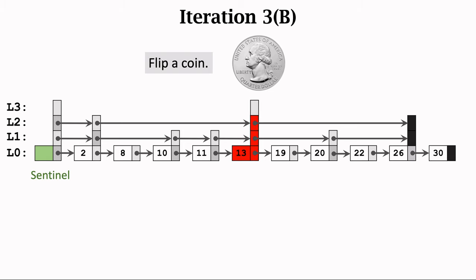The third example is to search for the key 20. Start from the Sentinel, move one step right and arrive at node 13. The key is greater than 13, so the key must be on the right side of node 13. However, node 13 is the end of layer L3, so we go down to L2. Start from node 13, move one step rightward in L2 — arrive at node 26. The key 20 is smaller than 26, so the key should be somewhere between node 13 and node 26. Go one layer down to L1. Start from node 13, go one step right — arrive at node 20. The key and the current node are both 20, so the key is found. Return the address of the node.